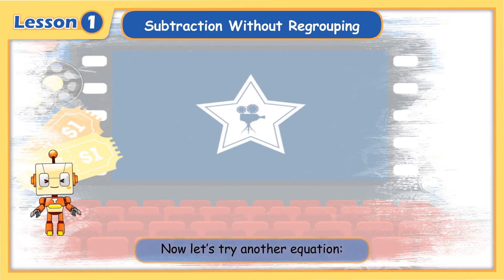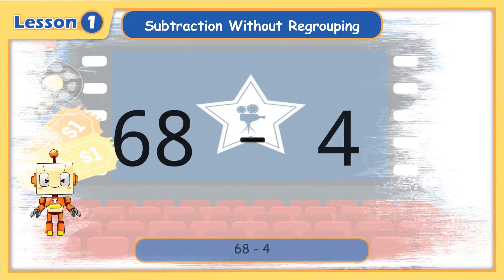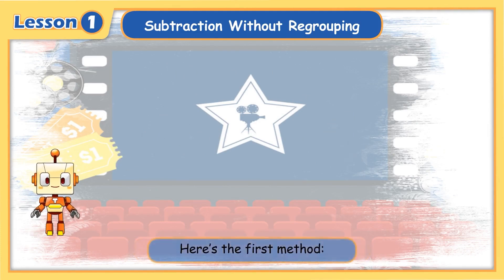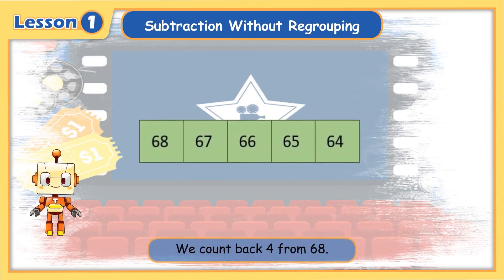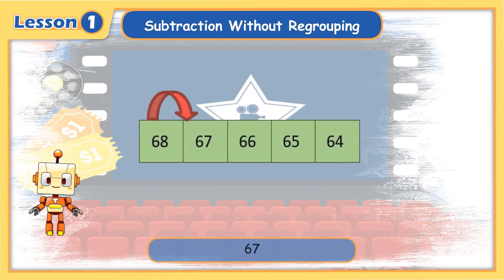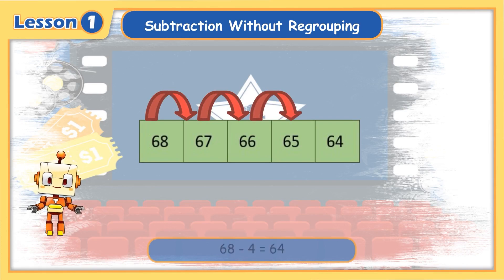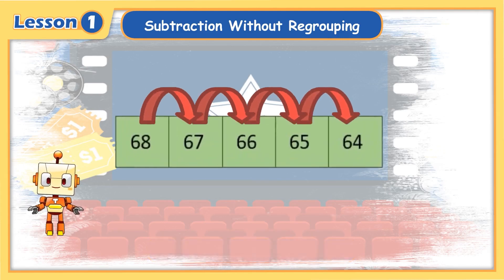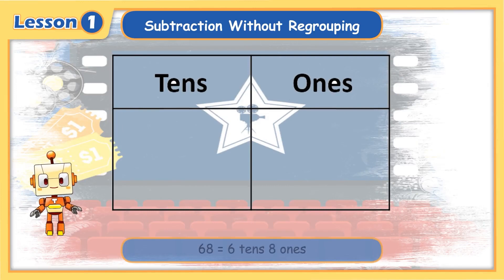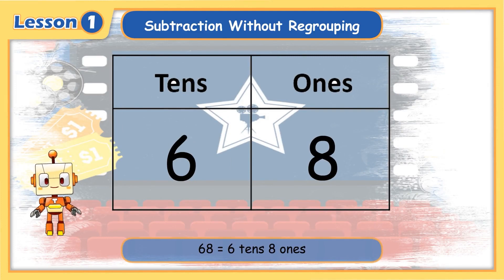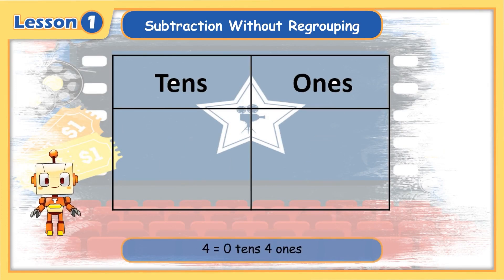Now let's try another equation: 68 minus 4. Here's the first method: we count back 4 from 68. 67, 66, 65, 64. 68 minus 4 equals 64. Here's the second method: 68 equals 6 tens, 8 ones. 4 equals 0 tens, 4 ones.